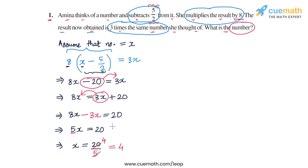So the number that Amina thinks of is 4. And now let's check whether this answer is correct or not. So first, Amina subtracts 5 by 2 from this number. So 4 minus 5 by 2 is equal to 8 minus 5 by 2 or 3 by 2.